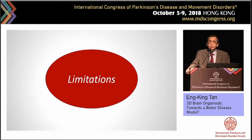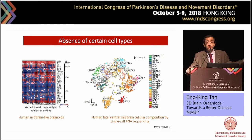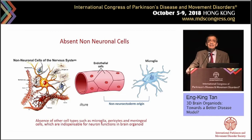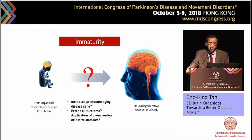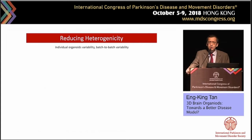Now on limitations: despite all these promises, there are numerous limitations. The organoid is very heterogeneous — it contains many cell types but lacks vascularization, lacks non-neural structures, and is immature. Comparing organoids with actual human fetal ventral mid-brain cellular composition by single-cell RNA sequencing, many genes found in the human ventral mid-brain are not found in the current version of mid-brain organoids. The absence of non-neural structures is a big problem as it limits growth over time. The immaturity question is also important — brain organoids resemble early-stage fetal brain, so how do we study aging and apply this to understanding degenerative conditions? These are very big questions.